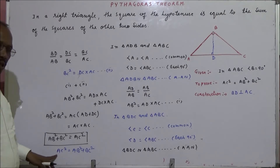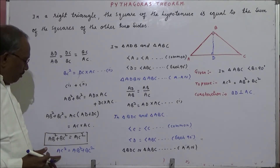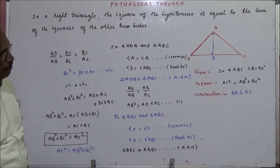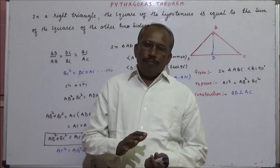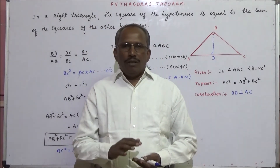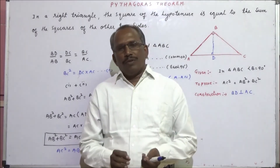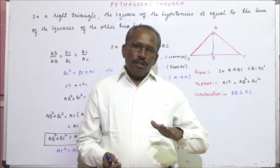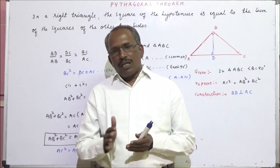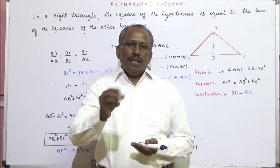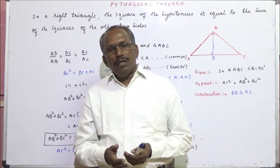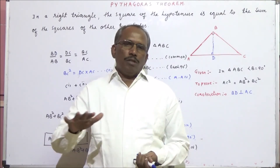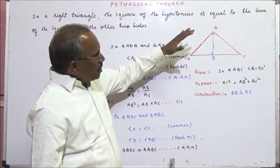That means in a right triangle, square of the hypotenuse is equal to sum of the squares of the other two sides. This theorem will be asked in examination, and using this theorem we have to solve exam problems.